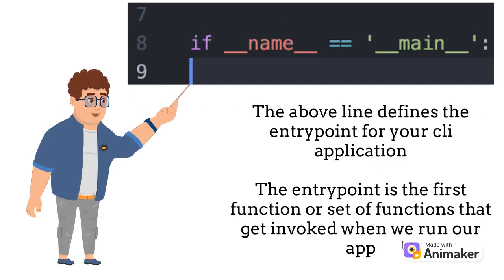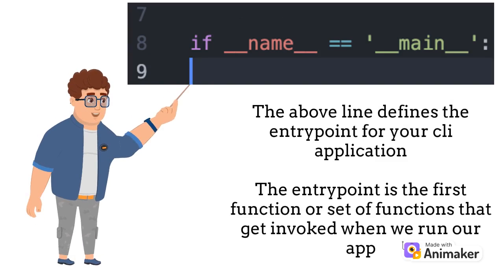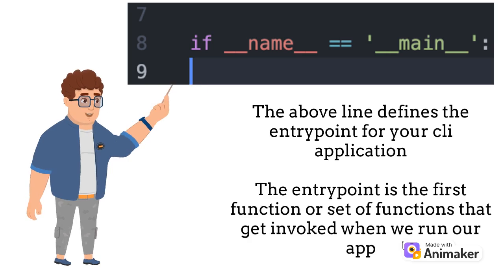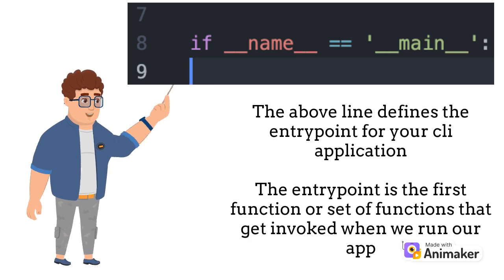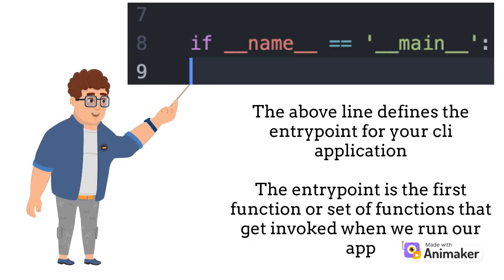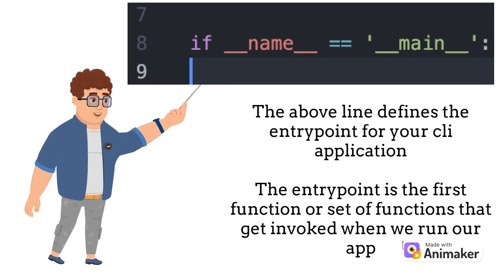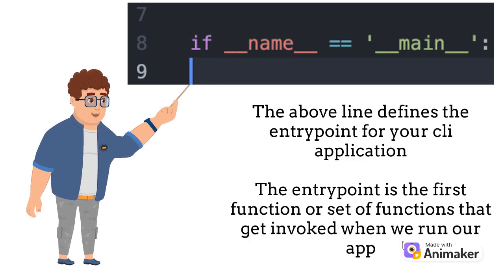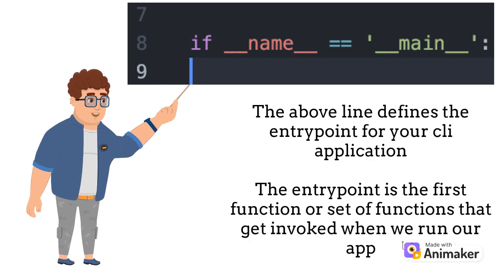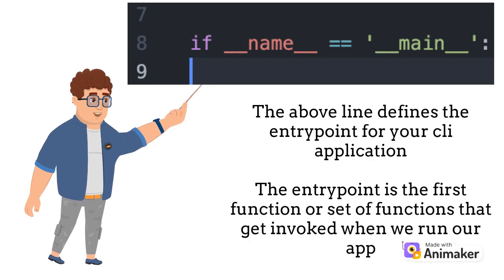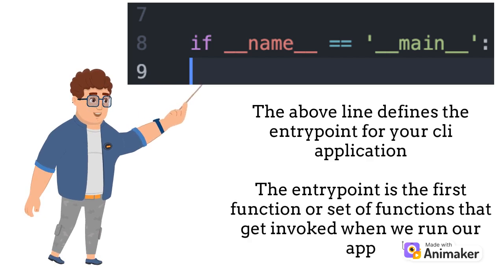The statement if __name__ == '__main__' is what defines the entry point for the command line application. The entry point tells the Python 3 interpreter which functions to invoke first whenever a user tries to use the command line application.